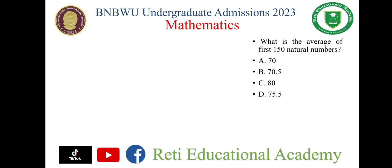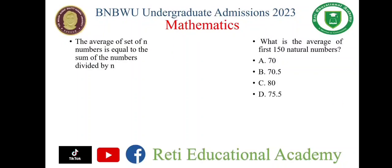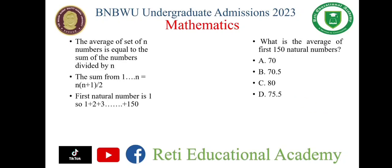What is the average of the first 150 natural numbers? The average of a set of n numbers is equal to the sum of the numbers divided by n. The sum of first n natural numbers is equal to n multiplied by (n+1) divided by 2. The first natural number is 1.